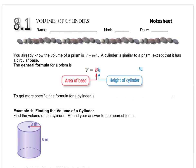You learned the formula for the volume of a prism, which is one of our most basic shapes. A prism is just a box, a 3D rectangle, whatever you want to call it. The formula you learned was length times width times height — that's how you find the volume of the prism.